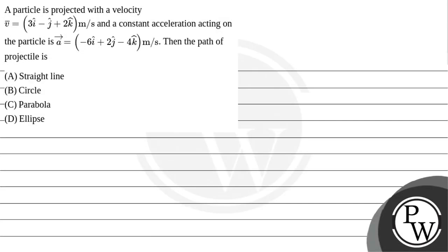Hello guys, let us read the question. A particle is projected with velocity v equals 3i cap minus j cap plus 2k cap